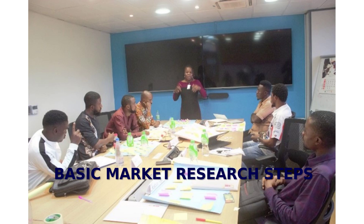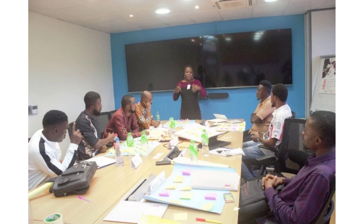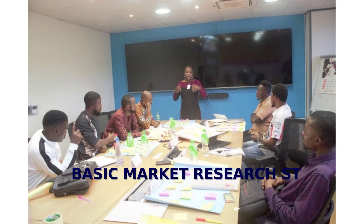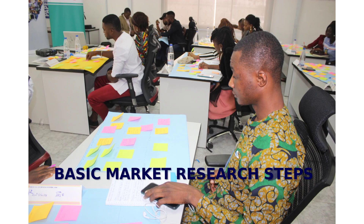Market Structure: Finding out the marketing channels available, e.g., do you need to belong to an association before you could sell, do your competitors sell on credit, do you require agents, what is the supply chain? Environmental Forces: Finding out what factors affect your business directly or indirectly, e.g., political, economic trends, social issues and technological.